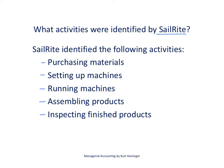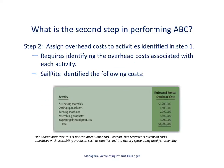Sailrite identified the following activities: purchasing materials, setting up machines, running machines, assembling products, and inspecting finished goods. Those are the five different activities identified as significant within Sailrite's production process.